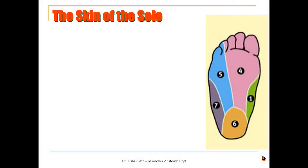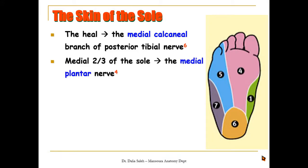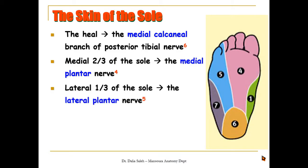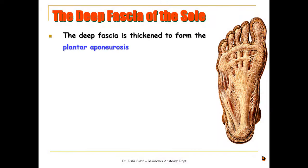The sole of the foot is supplied as follows: the heel area is supplied by the medial calcaneal branch of the posterior tibial nerve. The medial two-thirds of the sole with the medial three and a half toes is supplied by the medial plantar nerve, while the lateral third of the sole and the lateral one and a half toes is supplied by the lateral plantar nerve. The medial side of the foot is supplied by the saphenous nerve, while the lateral side is supplied by the sural nerve.